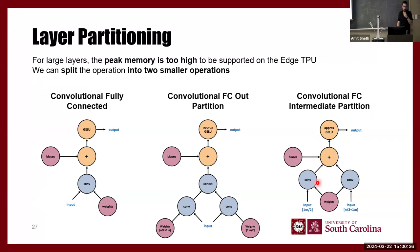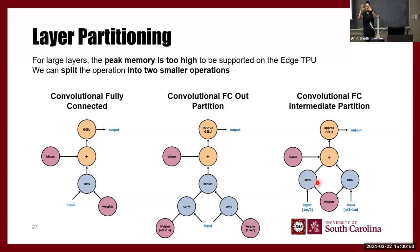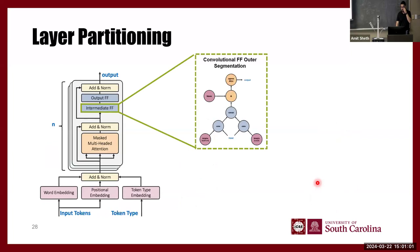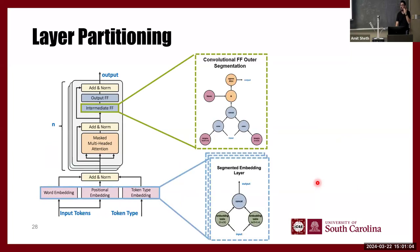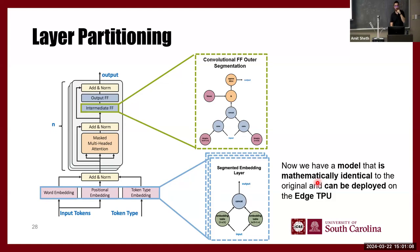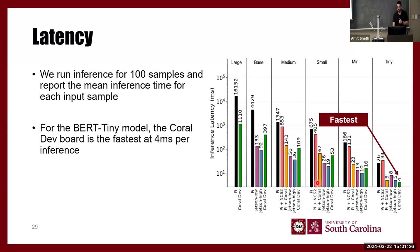The last challenge was memory: when matrices got larger we didn't have enough cache, so we partitioned them and processed sequentially — first partition, then second, alternating — avoiding memory violations. By doing these refactorings, changing the computational graph, we eliminated all compilation errors. We could now deploy encoder-only and encoder-decoder architectures on TPU.